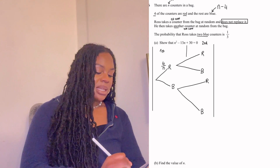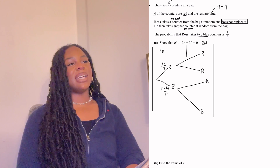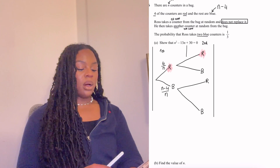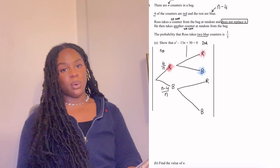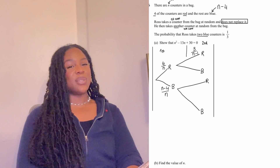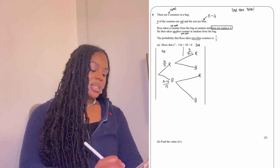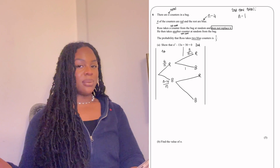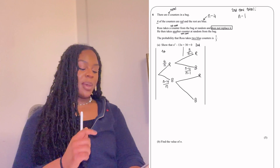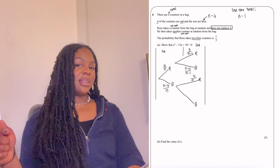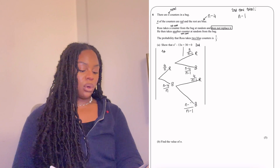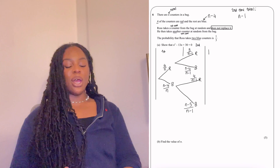Now let's fill in the probabilities. Red counters: 4. Blue counters: n minus 4. First branch — probability of picking red first: 4 over n. Blue first: n minus 4 over n. He's not replacing the counter, so we lose one. If he picked red second time after red: only 3 red counters left, total is n minus 1, so probability is 3 over n minus 1. If he picks blue after red: n minus 4 over n minus 1. If blue first, then red second: 4 over n minus 1. And blue after blue: n minus 5 over n minus 1.